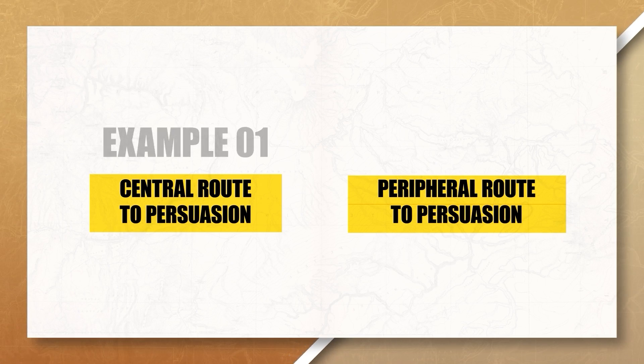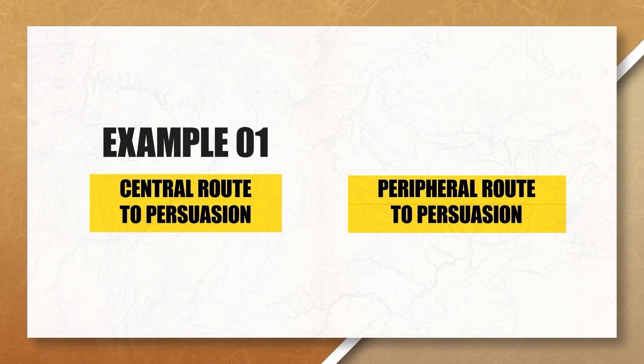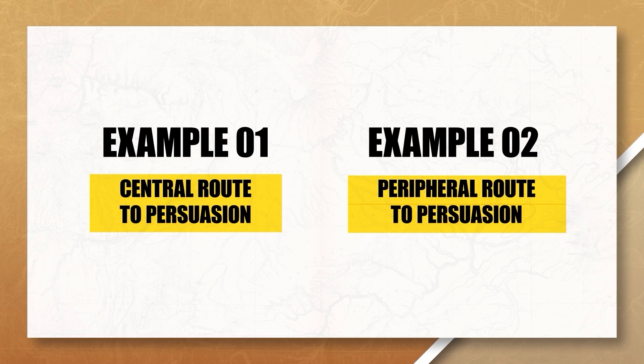Were you able to figure out which one is the central route and which one is the peripheral route? If you need more time, pause the video. Notice how the first sales pitch focused on the phone's components and how it performs — this would be an example of the central route to persuasion — while the second argument focused on how the phone will look and how it'll make you feel, which would be an example of the peripheral route to persuasion.